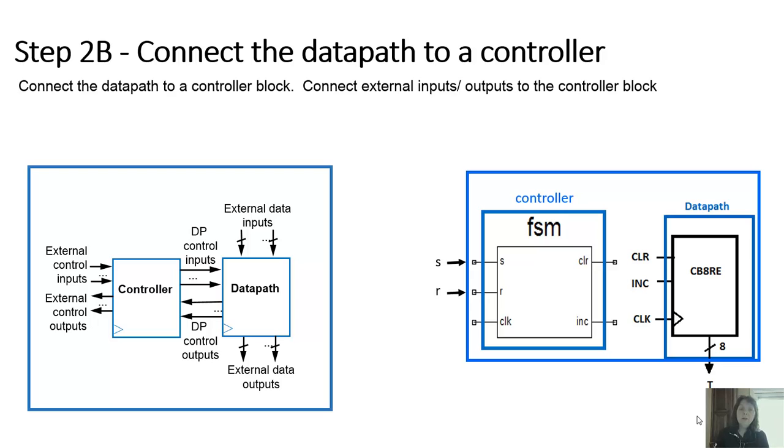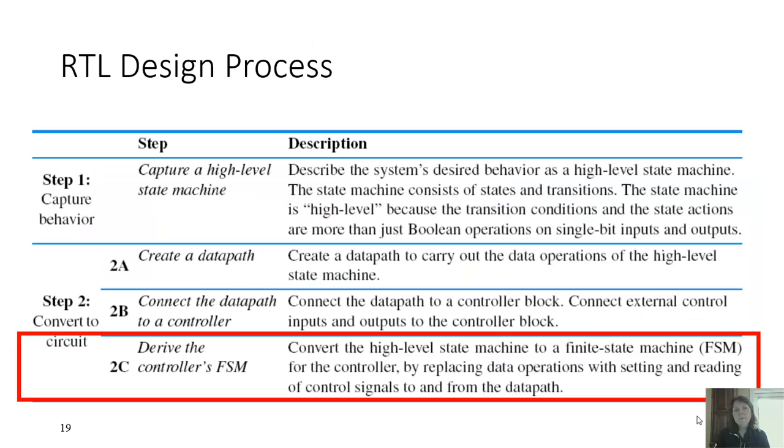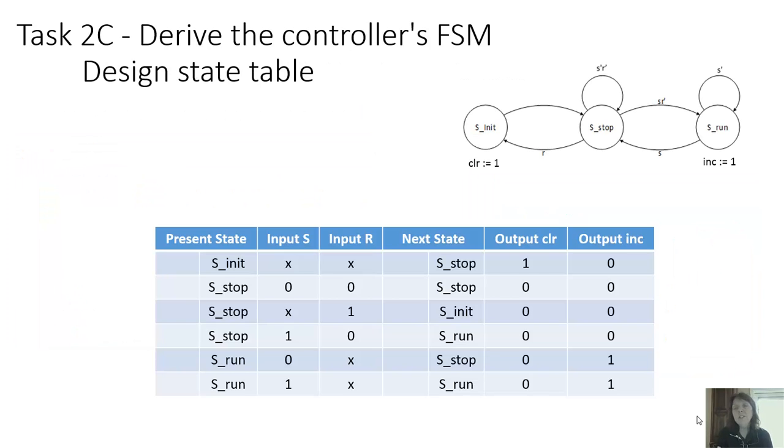And so we see our black box. Step 2C is to derive the controller's finite state machine. This basically is just a repetition of what we've been doing in chapter 2. We go back and we begin to first change our high level state machine to map our names that we need coming out of the controller to our finite state machine. And just as before, we make a state table so that we can begin to design our finite state machine, our controller. And you can see we have three states.